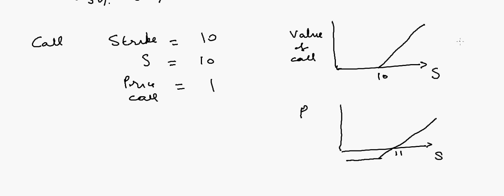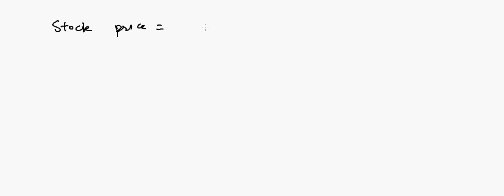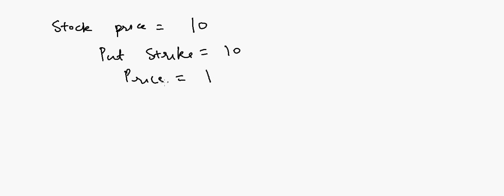Now let's talk about the put option. In the case of a put, instead of having the option to buy the stock, this is the option to sell the stock. Again, if the stock price is $10 and the price of the put is $1, the stock price can either go to $5 or $15.